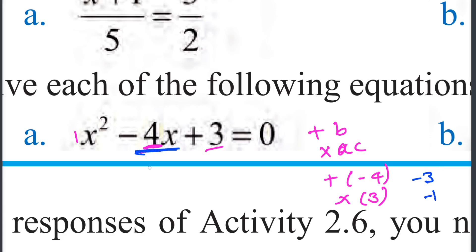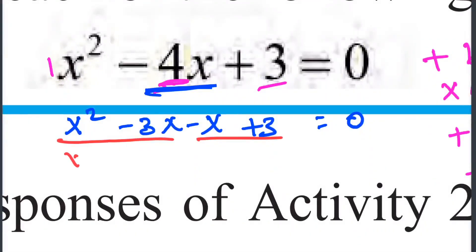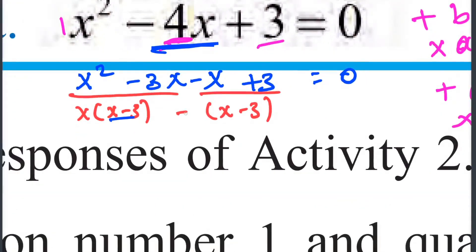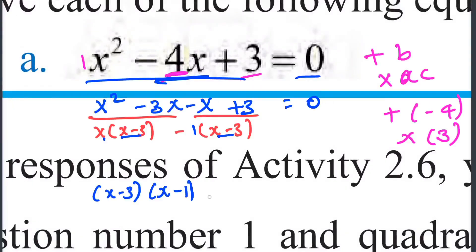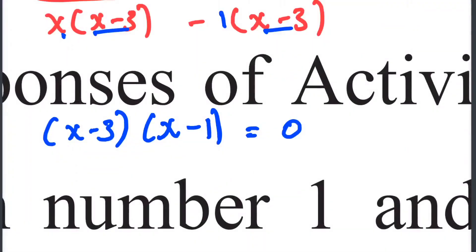Negative 3 and negative 1. So, 4x is negative 4x, which is negative 3x minus 1x. Our terms will be negative 6x minus 3, equal to 0.